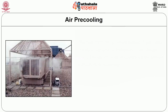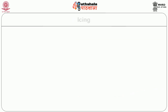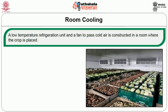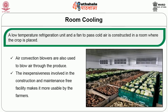Air pre-cooling is the most commonly practiced method of pre-cooling of fruits, using cold air. Refrigerator cars, storage rooms, tunnels or forced air coolers are the different methods of air pre-cooling. The next important method is icing, where an ice slurry containing 60% coarsely mashed ice and remaining percentage of water, or crushed ice, is placed directly on top of the crop. Next comes room cooling, where a low temperature refrigeration unit and fan pass cold air throughout the room where the crop is placed. The inexpensiveness involved in construction and maintenance-free facility makes it more usable by farmers.